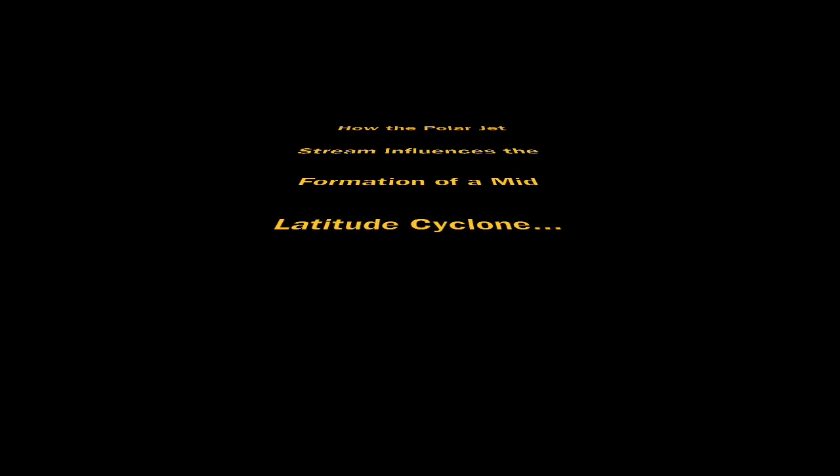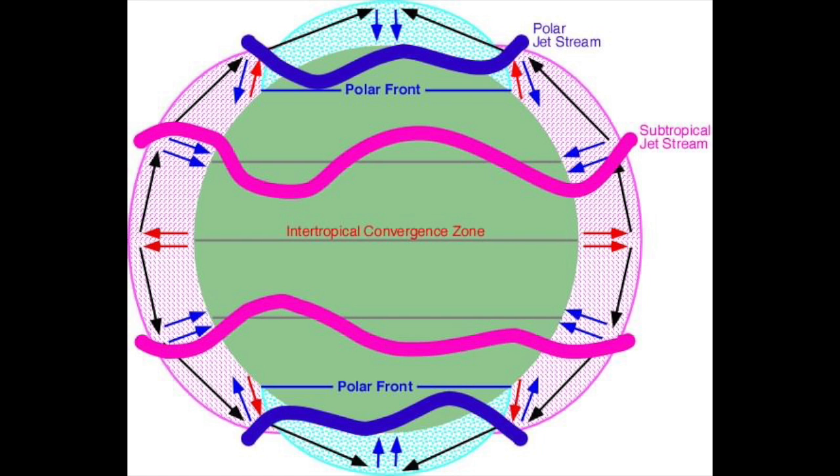How does the polar front jet stream influence the formation of a mid-latitude cyclone? Well, the polar front jet stream is a belt of powerful upper-level winds that sit on top of the polar front. They move westerly in the mid-latitudes.